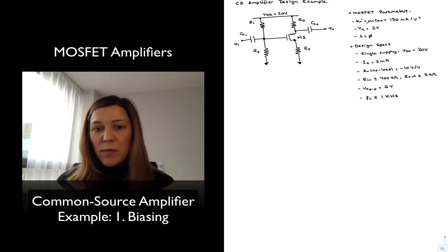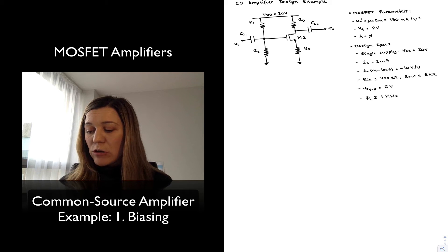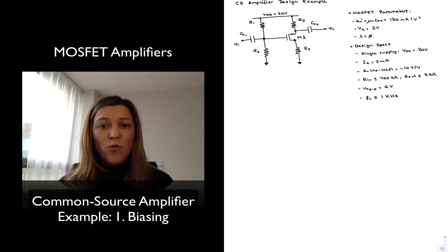I have two coupling capacitors at the input and at the output, assuming this is going to be a discrete transistor amplifier where I don't want my input signal to interfere with the DC bias point of my amplifier.